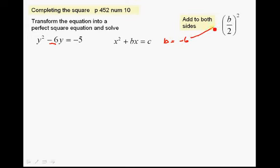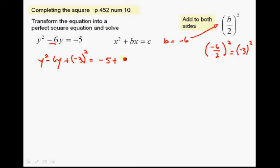So now we can put that in here and we can say we're going to be adding the quantity negative 6 over 2 squared. Now we can reduce this fraction, negative 6 over 2 is just equal to negative 3. So it's negative 3 squared. And we need to add that to both sides. So that'll be pretty straightforward. Say, y squared minus 6y plus negative 3 squared equals negative 5 plus negative 3 squared.